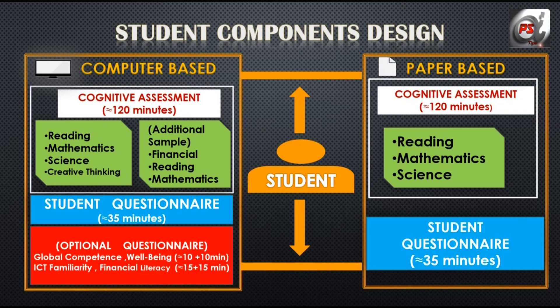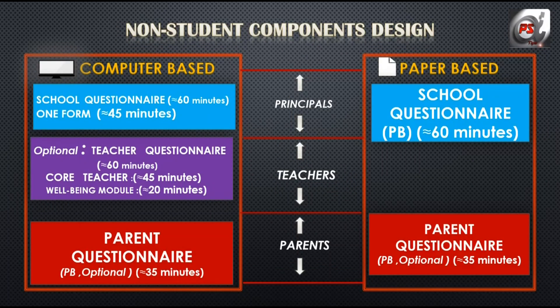Paper-based. This is divided into two sections: cognitive assessment and student questionnaire. There is no optional questionnaire in this one. The cognitive assessment will last up to 120 minutes, i.e. 2 hours, and the students will be assessed upon their reading literacy, mathematics literacy and scientific literacy. The second section's student questionnaire will last up to 35 minutes.